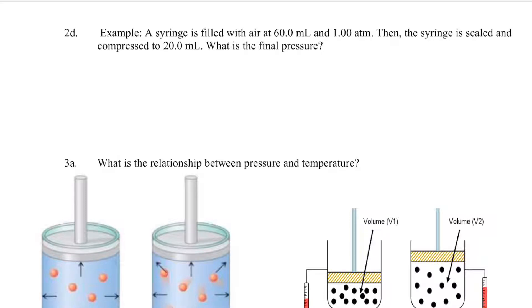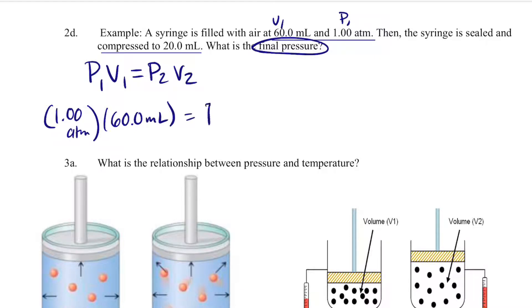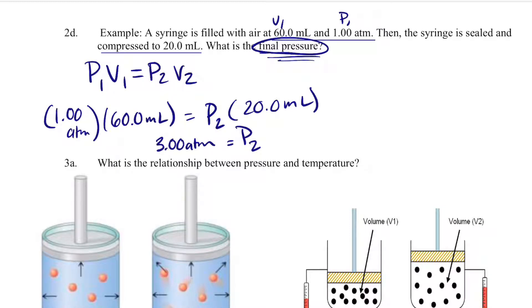Example problem: A syringe is filled with 60 mL at 1 atmosphere, then compressed to 20 mL. What is the final pressure? Using P1V1 = P2V2: P1 = 1.00 atm, V1 = 60.0 mL, V2 = 20.0 mL, solving for P2 gives 3.00 ATMs. This makes sense — decreasing the volume to one-third means the pressure should be three times the original, because it's an indirect relationship.